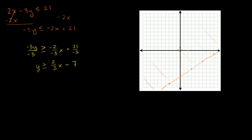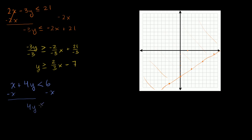Now let's add another inequality in blue: x plus 4y is less than 6. I want to mix it up with a strict inequality, without an equal sign, just so we remember how to graph these things. Putting it into slope-intercept form by subtracting x from both sides gives 4y < negative x plus 6, and dividing by 4 gives y is less than negative 1/4 x plus 6.